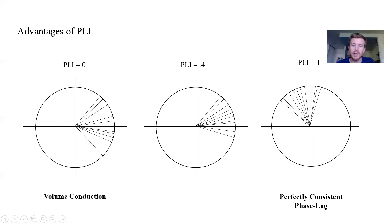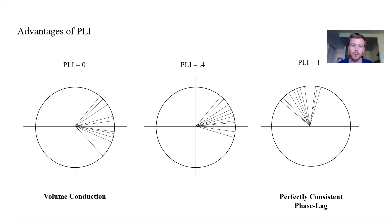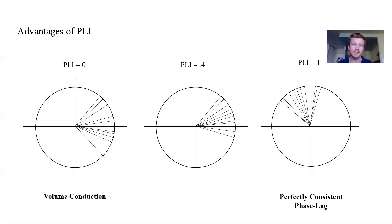A perfect phase lag index of one means all phase lags had the same sign — across every trial, channel FPZ was always leading channel PZ — indicating a statistical dependency and therefore connectivity. An intermediate value between zero and one, which is what you'll get the vast majority of the time, quantifies how consistent those phase lags are across all trials.